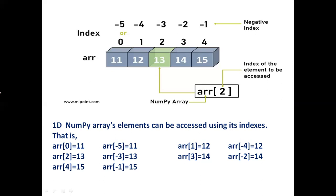Look at this one-dimensional array. To access elements, you simply write the array name — ARR — and then provide the index value. For example, to access the element 13, the index value is 2, because 11 has index 0, 12 has index 1, and 13 has index 2. So array index 2 will access 13. Similarly, array index 0 accesses the first element, which is 11.